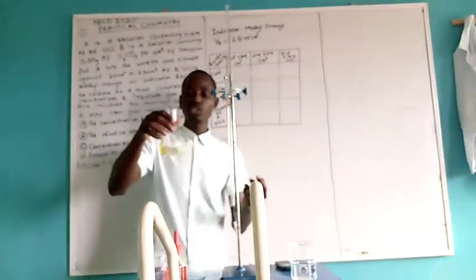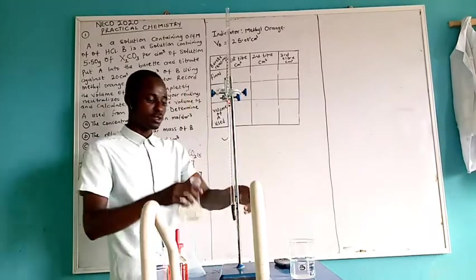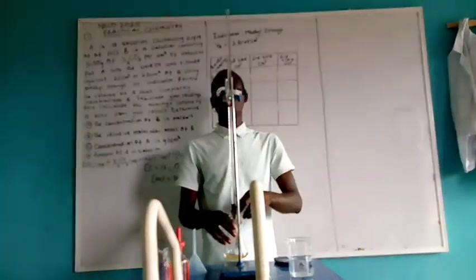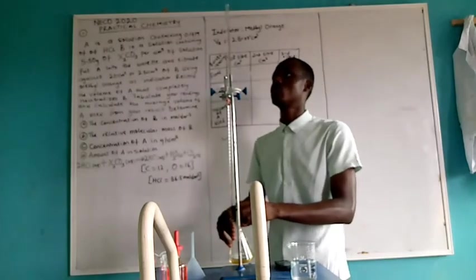When we titrate, the color change indicates the end point of the reaction. Let's proceed. We start the titration. We titrate the acid against the base.